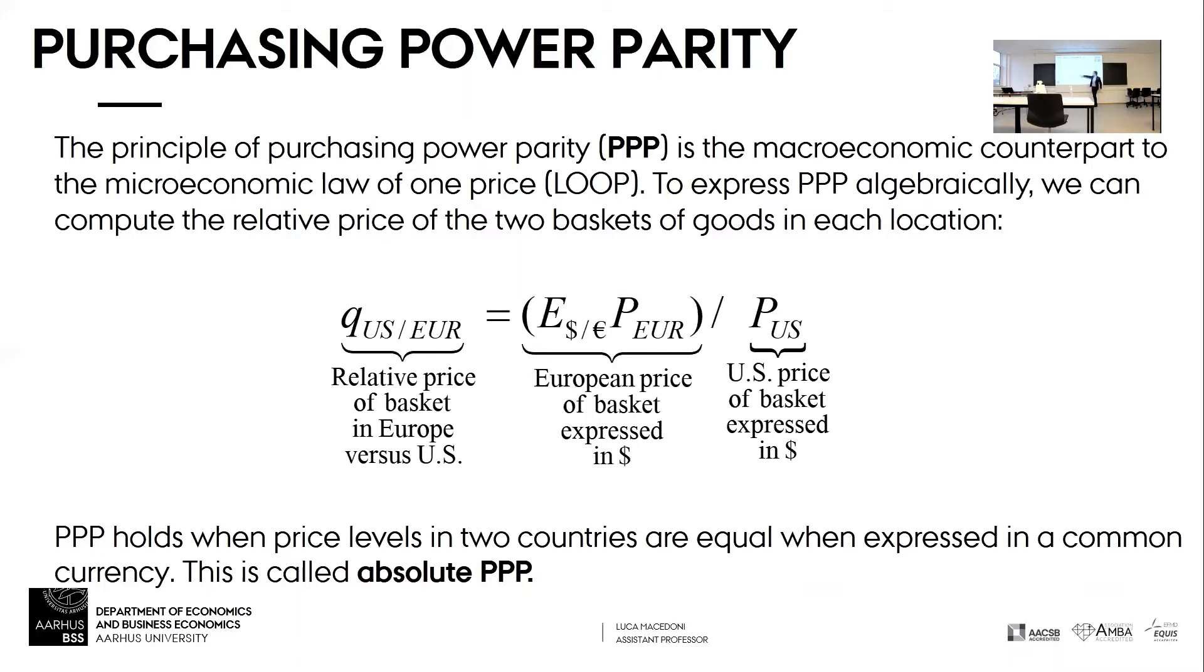Here we have the relative price of basket of goods, Europe versus US, which is the ratio between European basket of goods price expressed in dollars. So here we're taking the average price of coffee times the average expenditures on coffee plus average price on bread times average expenditures on bread and so on and so forth.